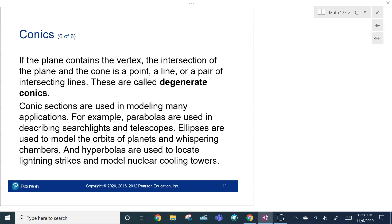Conic sections, just to finish this out, are used in modeling. Parabolas can be used to describe searchlights, telescopes. Ellipses on the other hand, orbits of planets, whispering chambers. Hyperbolas, lightning strikes, modeling nuclear cooling towers. These are all applications of conics, conic sections.